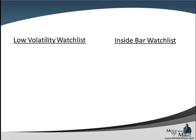As we come to our watch list, first up we have our low volatility watch list — this is our H1 one-hour time frame with the Bollinger Bands, and currently we're going to be watching the Aussie dollar and the dollar franc. We currently do not have anything for our inside bar watch list.